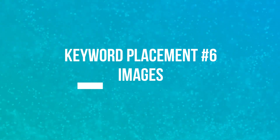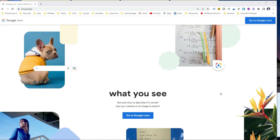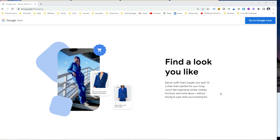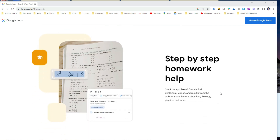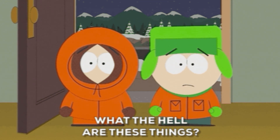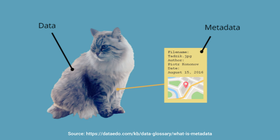The next important keyword placement is in your images — specifically in your image alt text and file names. While Google and other search engines are getting better at recognizing images, they do not have the capability to understand image content the same way humans do. Instead, they rely on other information such as the file name, the text surrounding the image, and the metadata associated with the image. Therefore, to help search engines it's important to write descriptive image names and alt text and include your primary and secondary keywords within them.